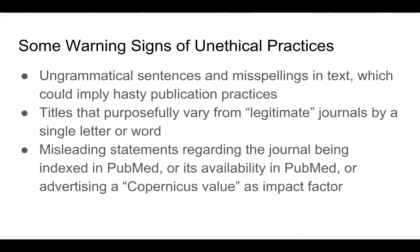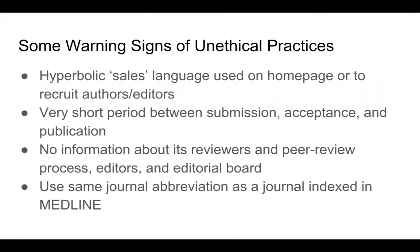So how do you, as a consumer of medical research, evaluate whether a journal you've found is generally reputable or is unethical? Some warning signs of unethical practices might be ungrammatical sentences or misspellings in the text, which could imply hasty publication practices. The journal may use a title that is purposefully a single letter or word away from a legitimate journal. They might use misleading statements regarding the journal being indexed in PubMed, or advertise a Copernicus value as the impact factor. They may use hyperbolic sales language to recruit authors or editors on their homepage. There may be a very short period between submission, acceptance, or publication. They may lack information about the reviewers or the peer review process, the editors, and the editorial board, or they might use the same journal abbreviation as a journal indexed in Medline.